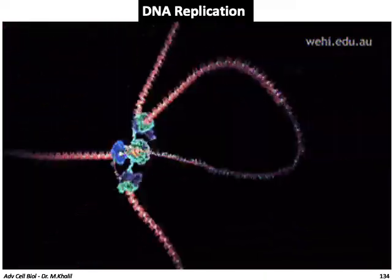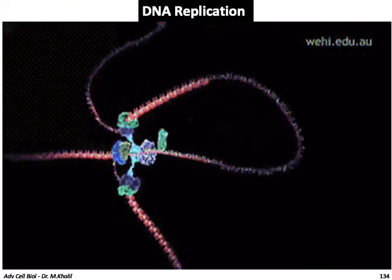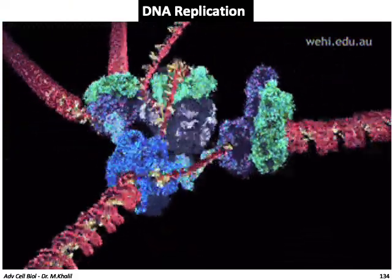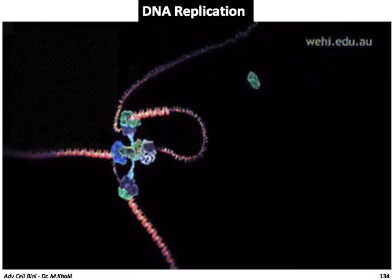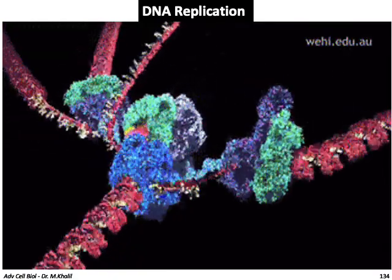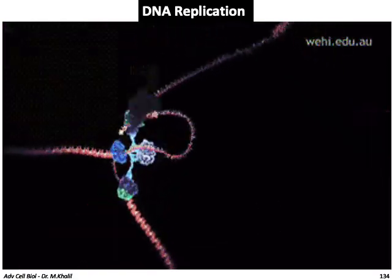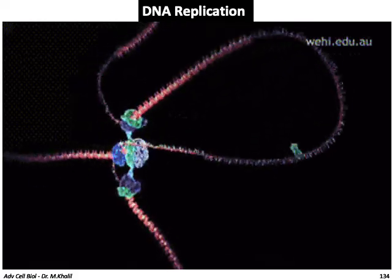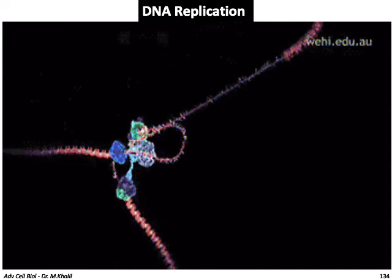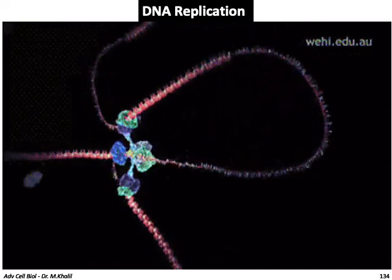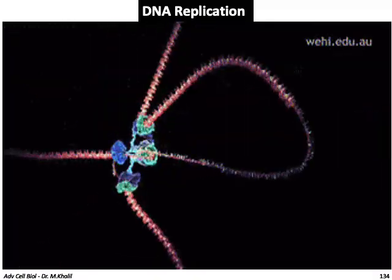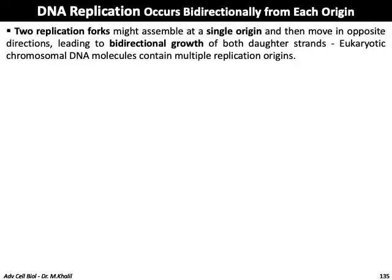DNA replication occurs bidirectionally from each origin. Two replication forks assemble at a single origin and move in opposite directions, leading to bidirectional growth of both daughter strands. Eukaryotic chromosomal DNA molecules contain multiple replication origins. A replication bubble appears and increases in size, with two replication forks at each side of the bubble.